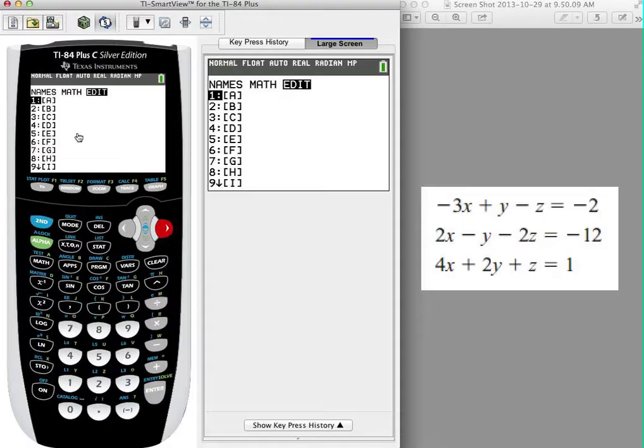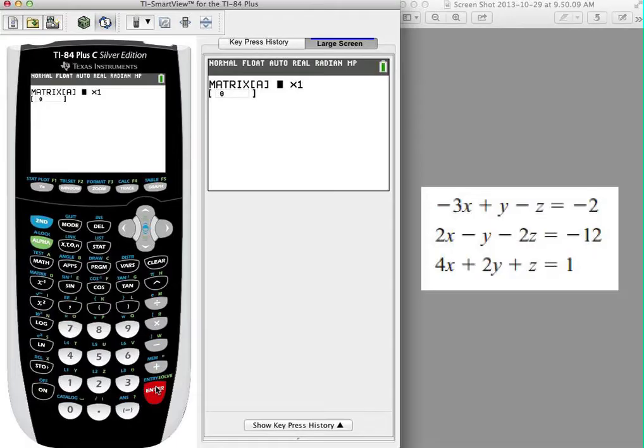I'm going to edit matrix A and enter it. It says what matrix A, how big is matrix A? And so here's how I'm going to tell how big matrix A is. You'll notice that I have one, two, three, four values in every single matrix, or in every single equation, excuse me, and there are three equations.